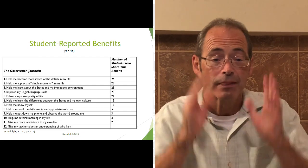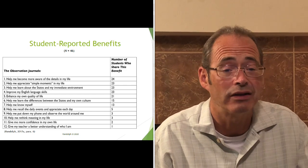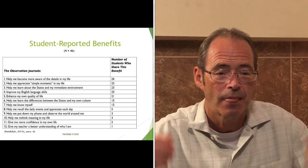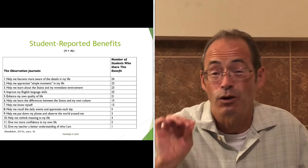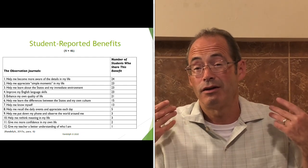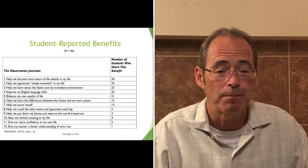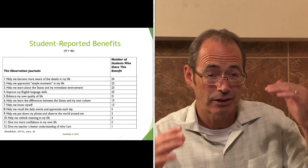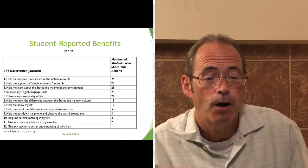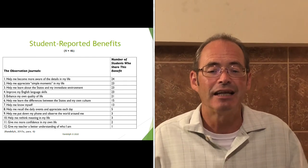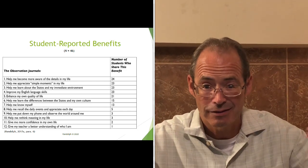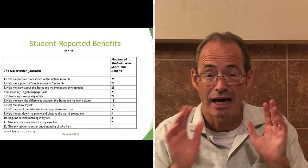Back to the student benefits: number five, 'enhanced my own quality of life' — being more observant about different things going on, their life just got better that particular semester. Number six, the journals helped them learn the differences between the States and their own culture, allowing cultural comparisons. Number seven, 'help me know myself' — 13 students said they got to know more about themselves. Number eight, helped them recall daily events and appreciate each day — they began to appreciate each moment and each hour rather than passing up a day worrying about next week's test. Number nine, helped them put down their phone and observe the world — only three students wrote that, but all 46 had to do it at some point.